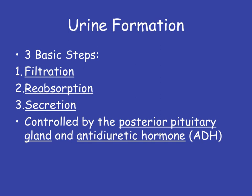A lot of the process of urine formation is controlled by the posterior pituitary gland and the hormone ADH, simply because a lot of our urine is made up of water. So the antidiuretic hormone is going to dictate what percentage of water is actually located within the urine itself.